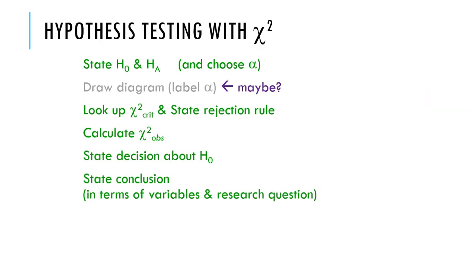So hypothesis testing with chi-square is the same as everything else. You state the null and alternative hypotheses, choose your alpha, look up a chi-square critical value — unless you're using a computer, then you don't need critical values — state your rejection rule, calculate the observed chi-square, state your decision, and state your conclusion. We'll do some examples of that in the next videos.